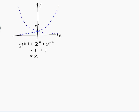Now what happens on either side of the axis? On the right-hand side where t is large and positive, 2^(-t) approaches the t-axis and is approximately 0. This means g is approximately equal to 2^t. To be formal: for t large and t > 0, 2^(-t) ≈ 0, so g(t) ≈ 2^t + 0 = 2^t. So on the right-hand side my graph gets closer and closer to 2^t.